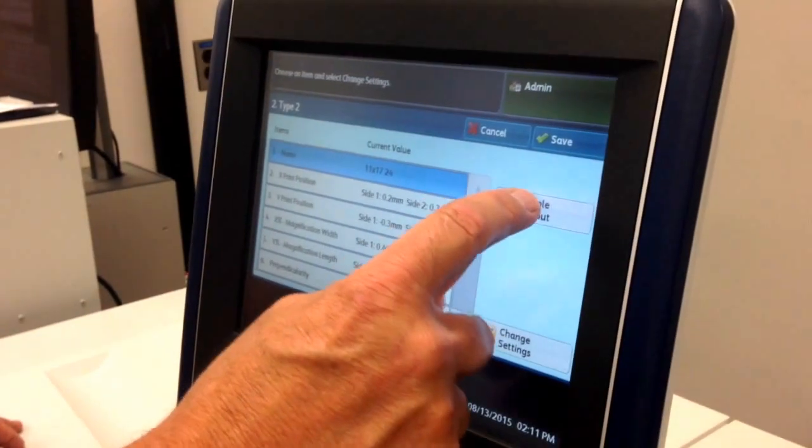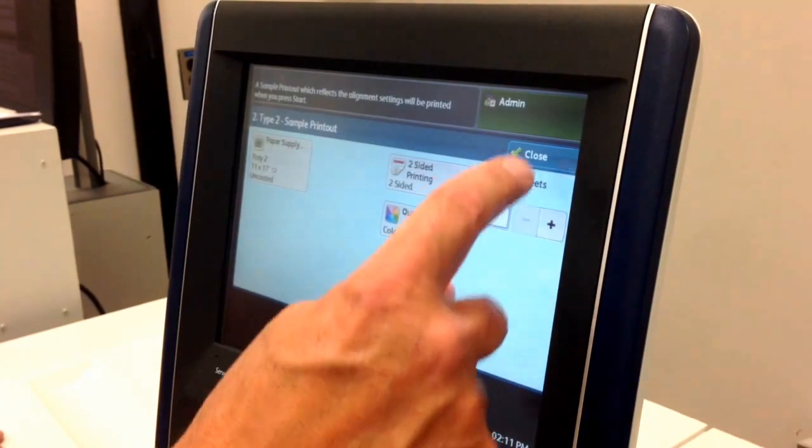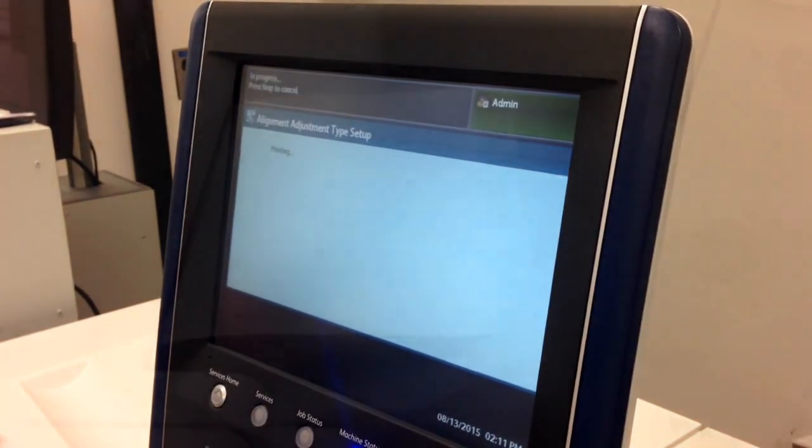Now let's go in and get a sample print out. So we're going to go in. We're going to make that second side so we can have a look at that profile. And we're going to go in and print.